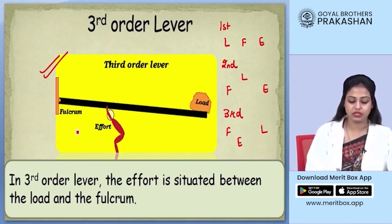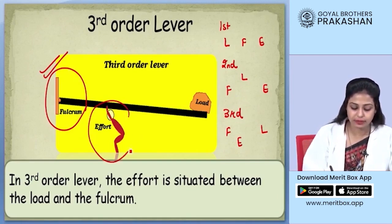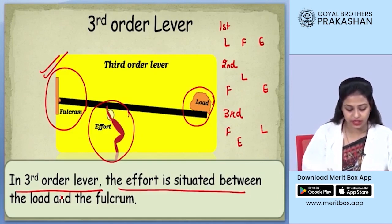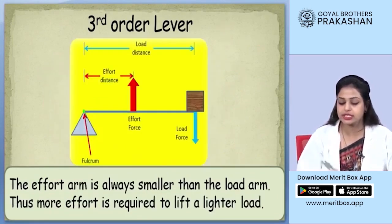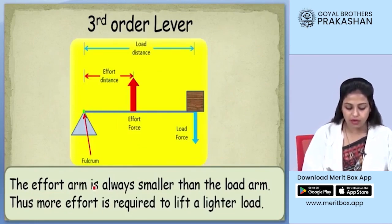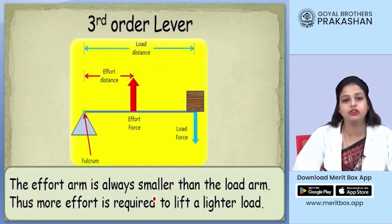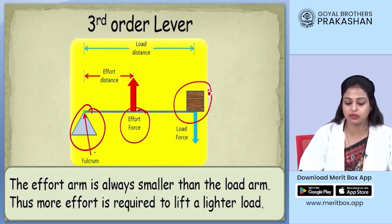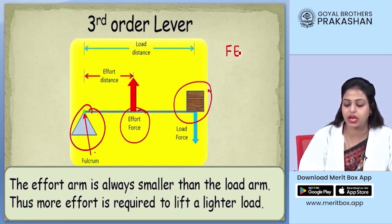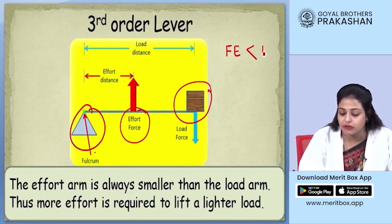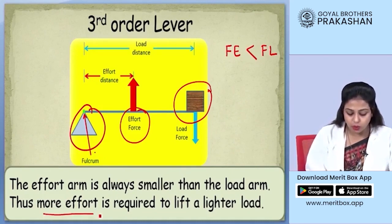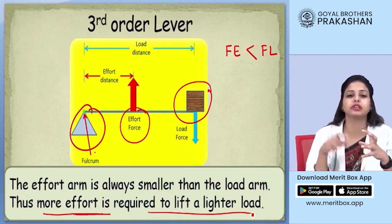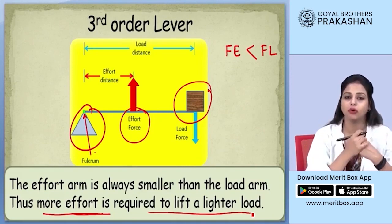As you can see in the image, the fulcrum is at one end, the effort is in between, and the load is on the other end. In third order lever, the effort arm is always less or smaller than the load arm — that is an obvious consequence since the effort is placed between the fulcrum and the load. So in this case, more effort is required to lift a lighter load.